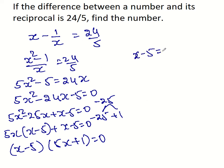Now you can take x minus 5 equal to 0, then x equal to 5. Or 5 x plus 1 equal to 0, then x equal to minus 1 by 5. So the number is 5 or minus 1 by 5.